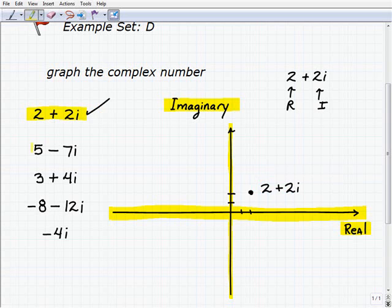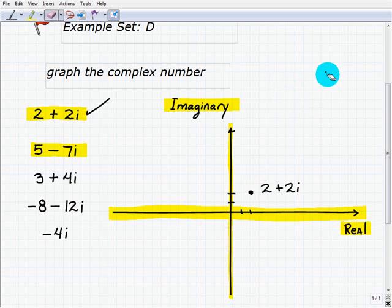Let's go on to our next example. So 5 minus 7i, that's going to be 5 on the real, so we have 1, 2, 3, 4, 5 on the real.